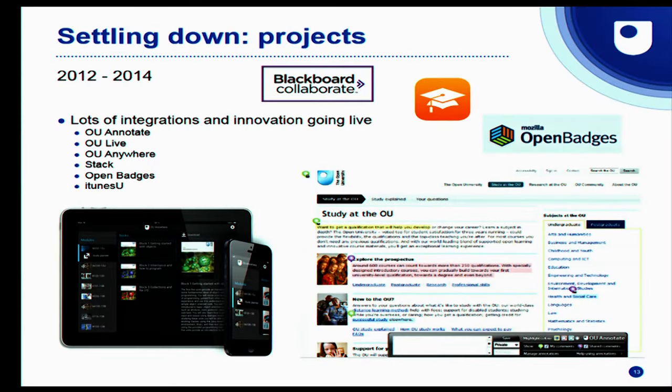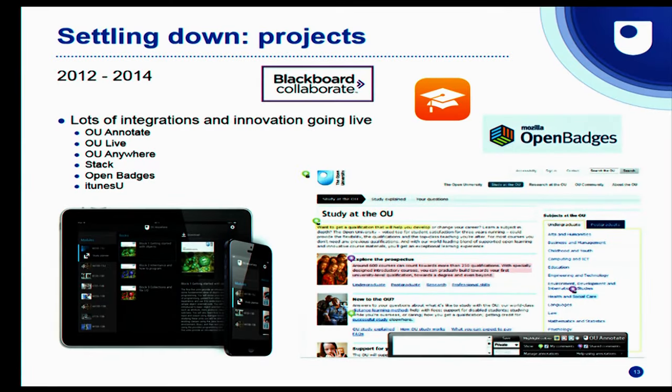So this is the period when all of those went live. Note the branding — they're all 'OU something or other.' The idea was that we could change the technology underneath without having to confuse students by changing the names of the tools. But that's something we're moving away from again now, going back to calling a spade a spade. OU Annotate is a web annotation tool which allows you to do with online materials what you would normally do in a printed text with Post-it notes or a highlighter pen. OU Anywhere is our mobile app for reading course content.